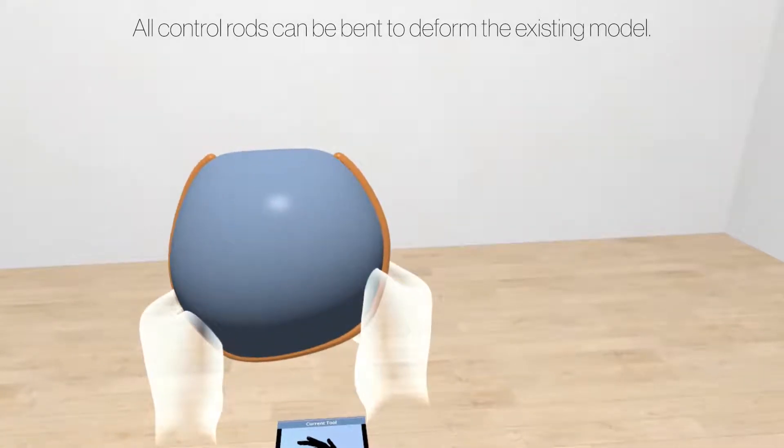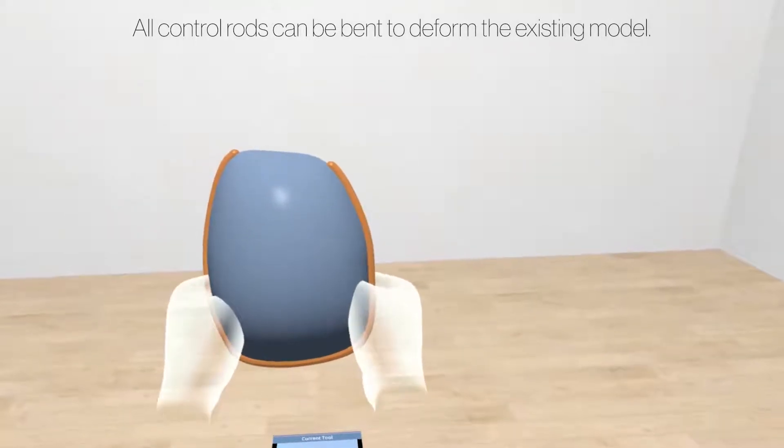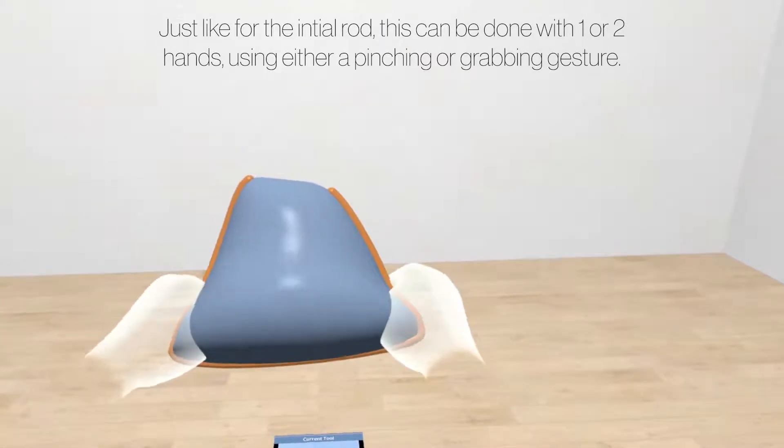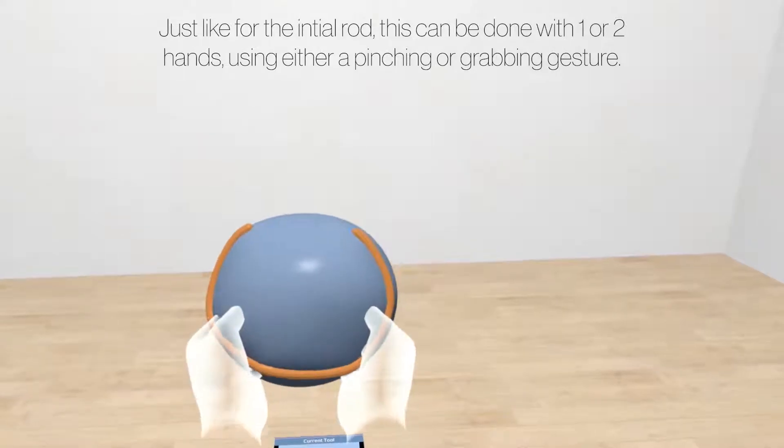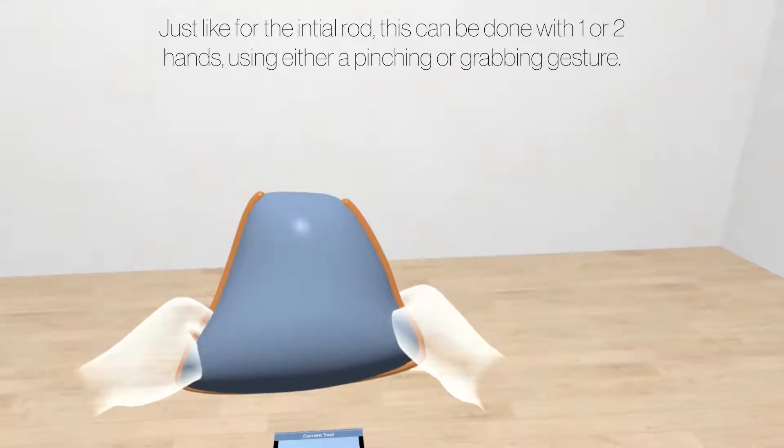All control rods can be bent to deform the existing model. Just like for the initial rod, this can be done with one or two hands, using either a pinching or grabbing gesture.